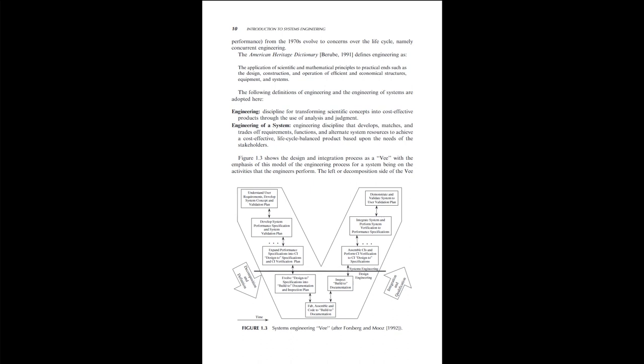Figure 1.3 shows the design and integration process as a V, with the emphasis of this model of the engineering process for a system being on the activities that the engineers perform. The left, or decomposition, side of the V includes: understand user requirements, develop system concepts, develop system concept and validation plan, and develop system performance specification and system validation plan.